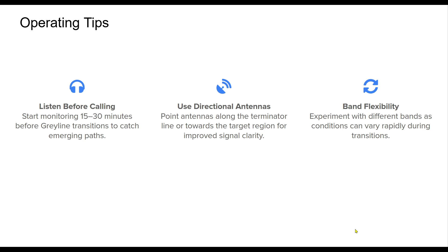To fully leverage gray line propagation, it's crucial to adopt strategic operating techniques. Start by listening for signals 15 to 30 minutes before transitions, as conditions often improve abruptly. Directional antennas can significantly enhance signal reception and clarity when aimed along the terminator. Also remain flexible with band selection — higher bands may briefly open, providing unexpected DX opportunities.